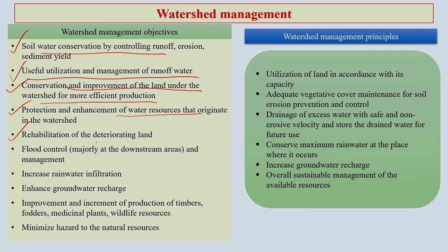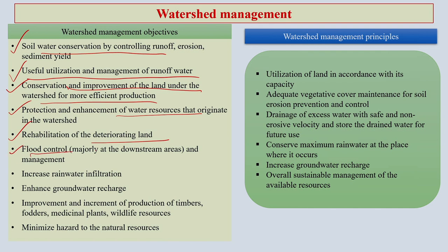Rehabilitation of deteriorating land — one of the easiest ways to do this is plantation of trees that are useful and suitable for the particular ecosystem. Flood control and management is very important. Increasing rainwater infiltration in the area so that groundwater can also recharge. Improvement and increment of production of different timbers in forest areas, medicinal plants, and wildlife resources, and minimizing hazards to natural resources by various means.